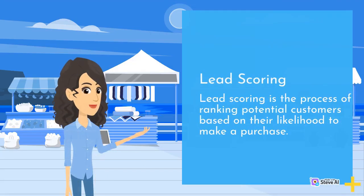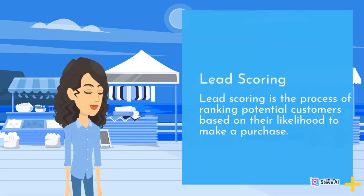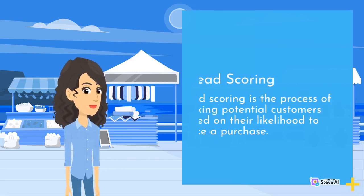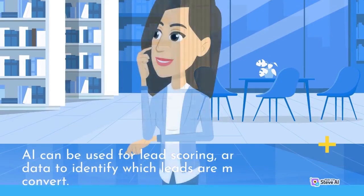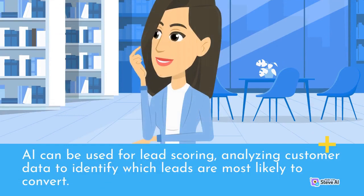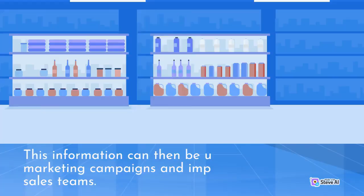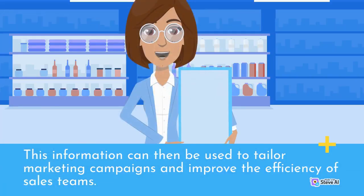Lead scoring is the process of ranking potential customers based on their likelihood to make a purchase. AI can be used for lead scoring, analyzing customer data to identify which leads are most likely to convert. This information can then be used to tailor marketing campaigns and improve the efficiency of sales teams.